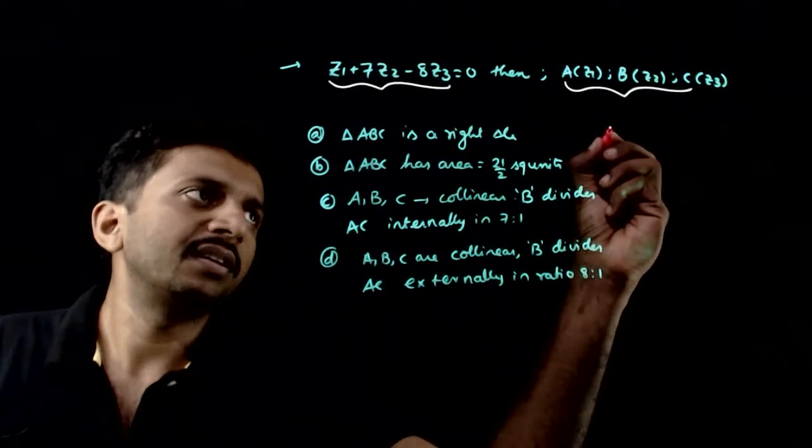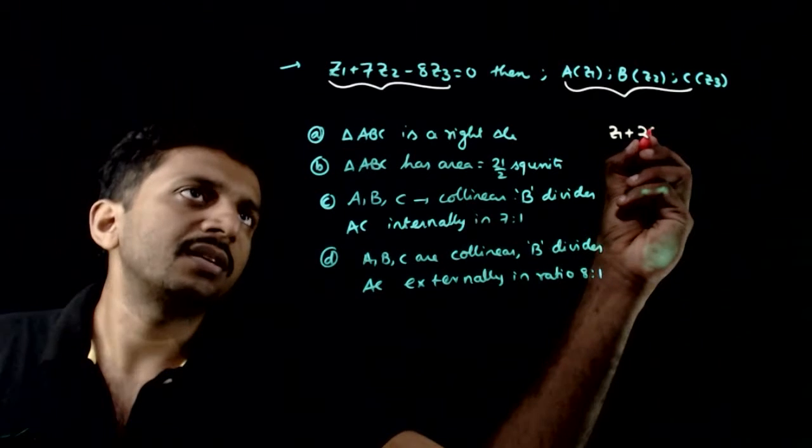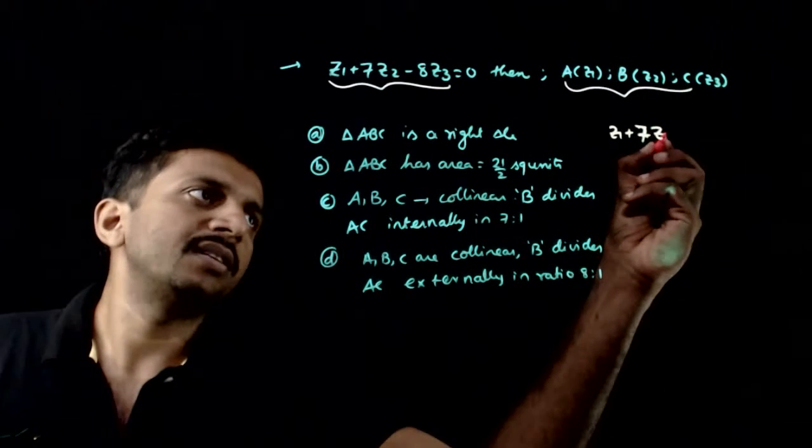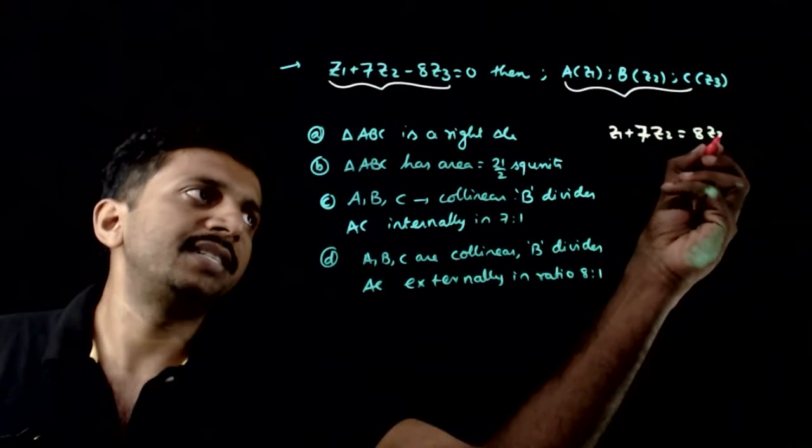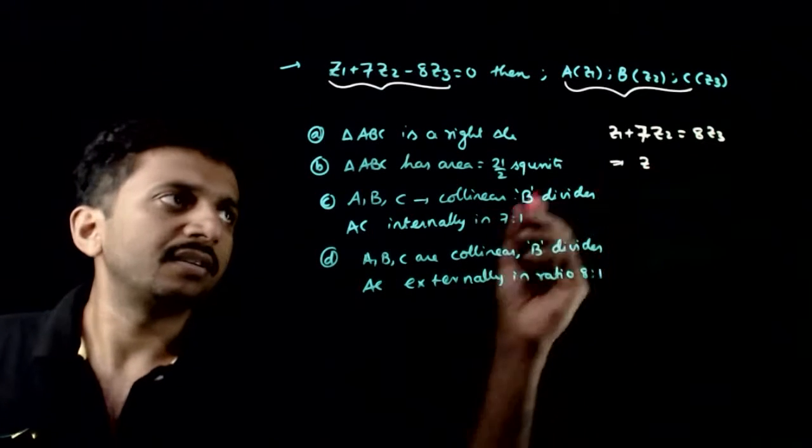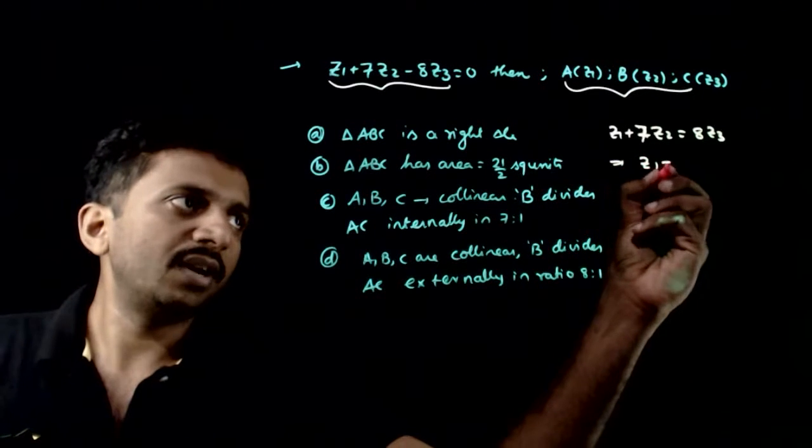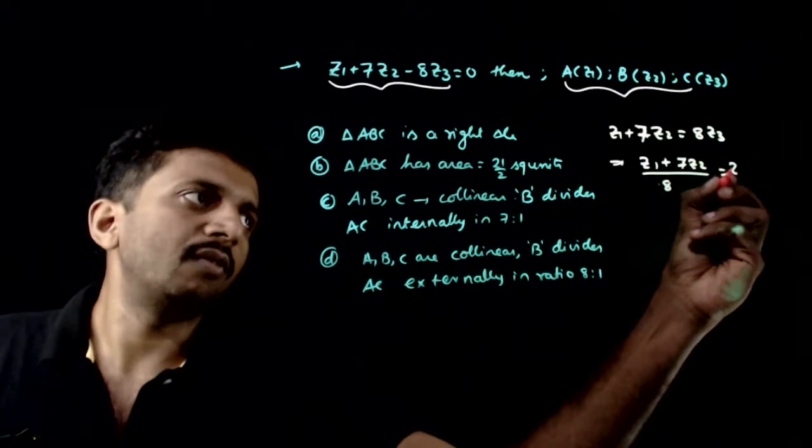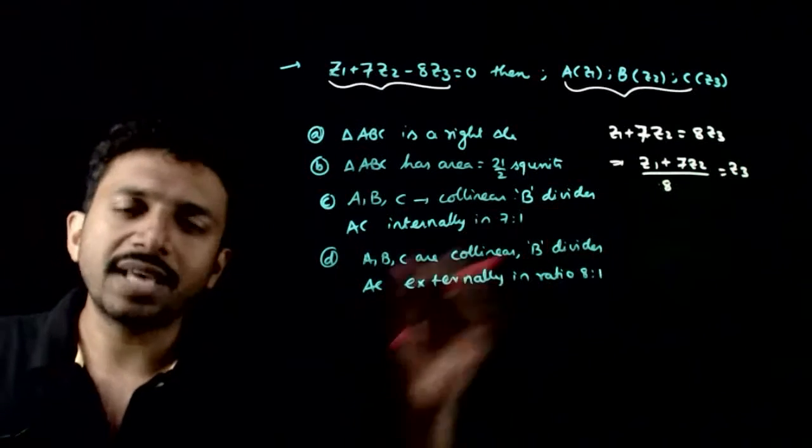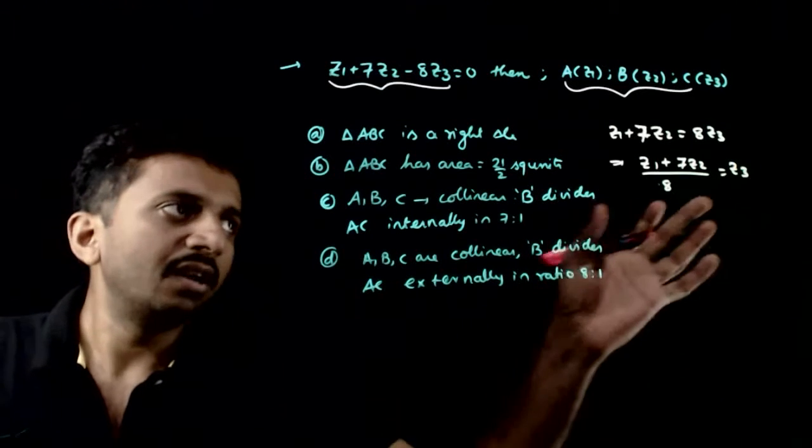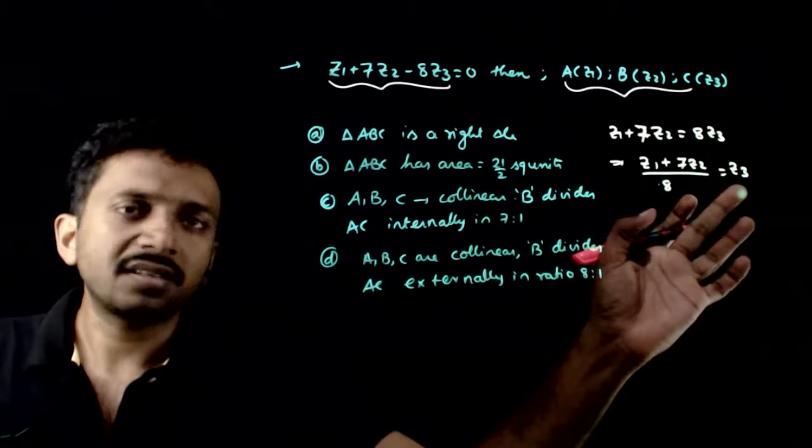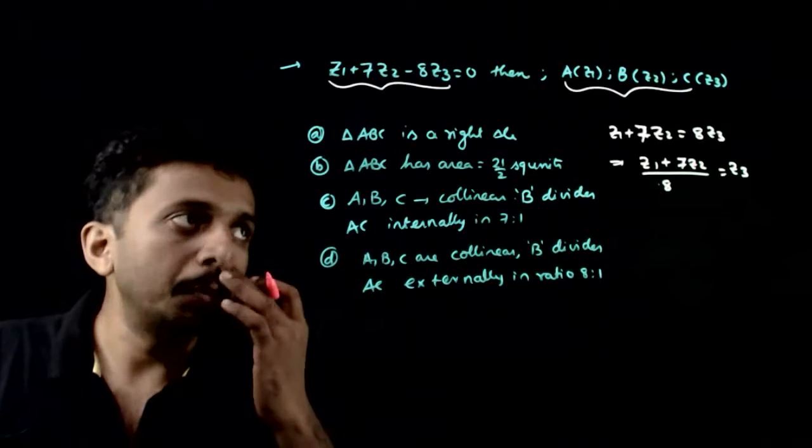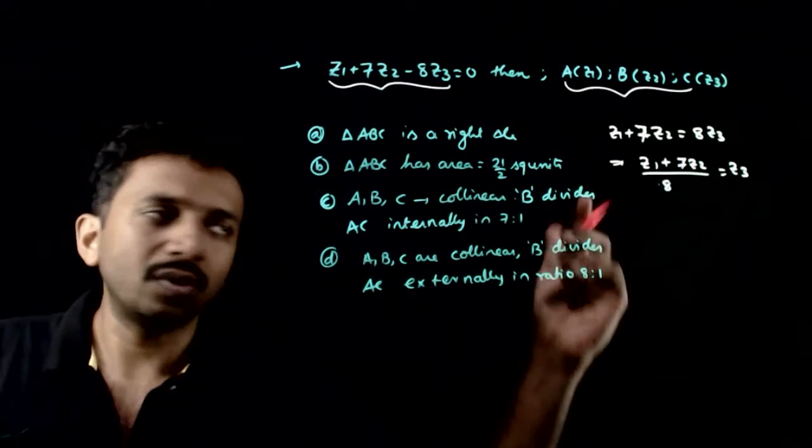The equation Z1 plus 7Z2 equals 8Z3 implies that Z1 plus 7Z2 divided by 8 equals Z3. This looks exactly like the section formula. So Z3 is dividing Z1 and Z2 in the ratio of 7 to 1.